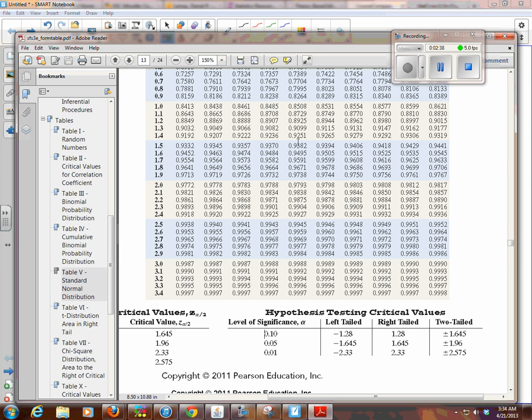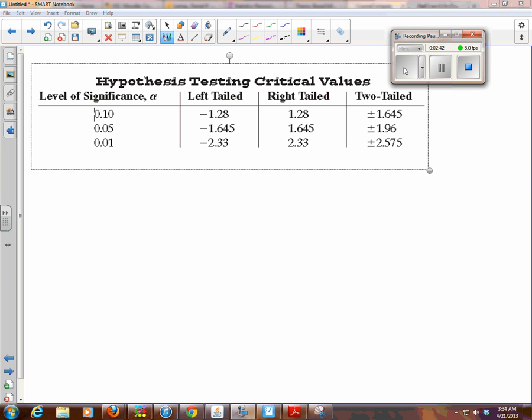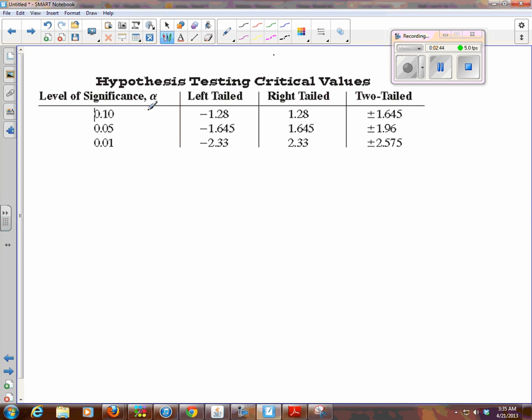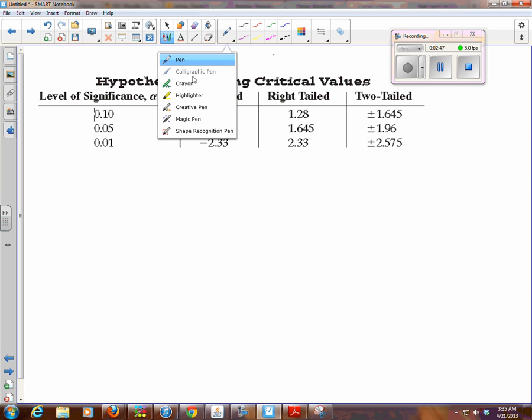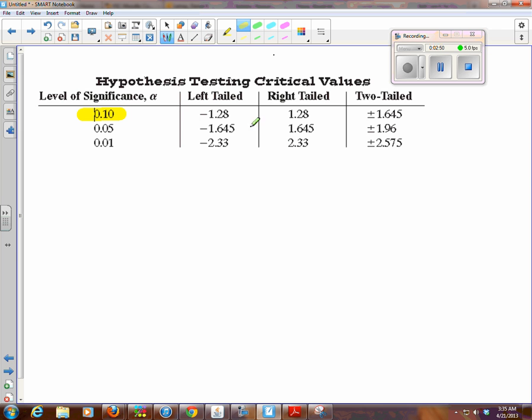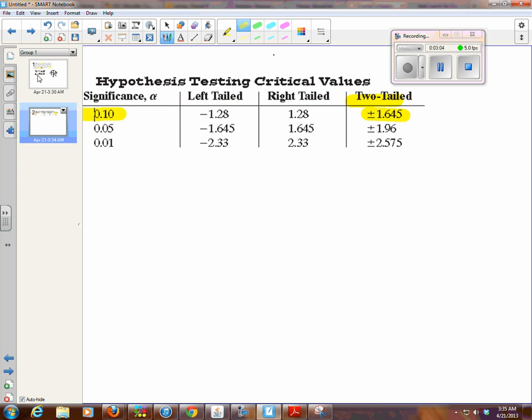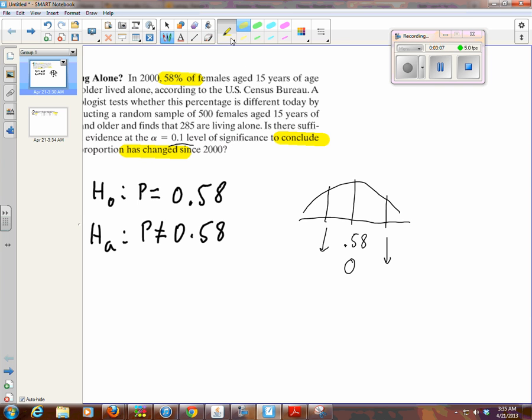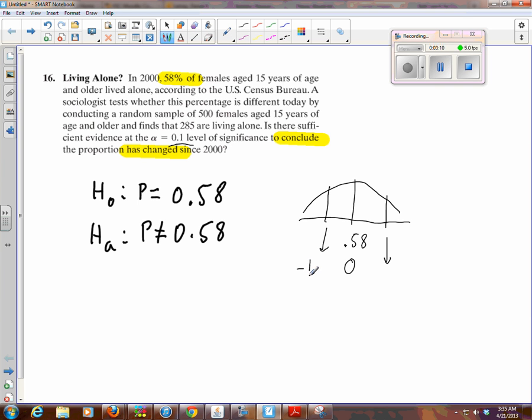So what we're doing is we're looking at that 10% level of significance, the 0.1, and we want a two-tailed test. So this is the critical value of z. In other words, that's the borderline, that's the fence that we're going to get past. So if we go back to that drawing I made, if that z-score is as low as or lower than negative 1.645, or higher than positive 1.645, then we can reject H0.